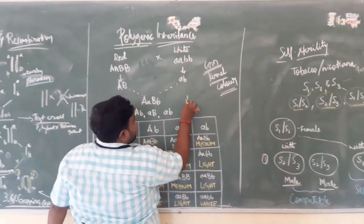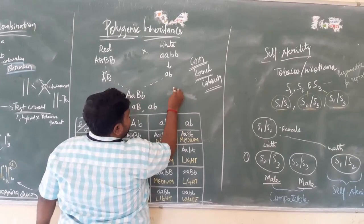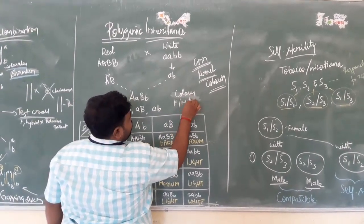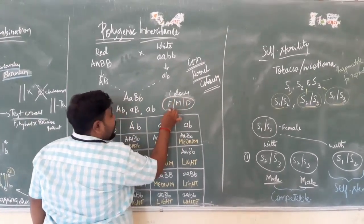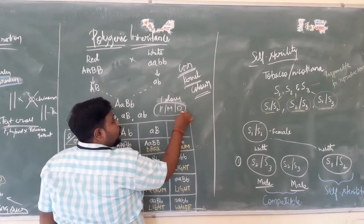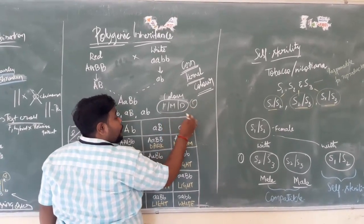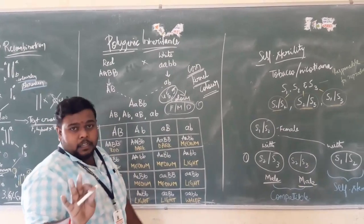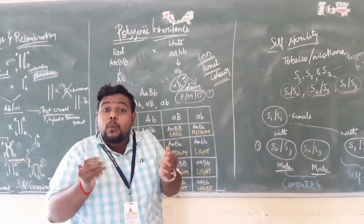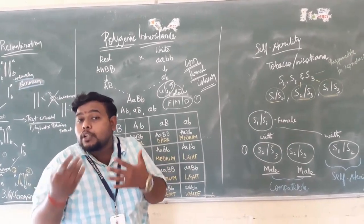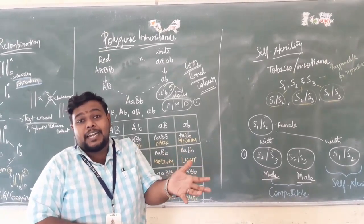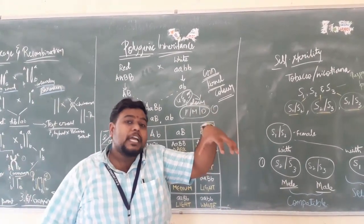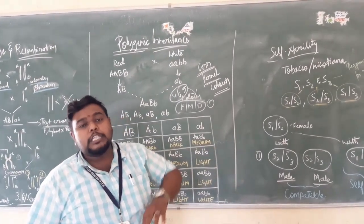Each of these colors is not controlled by one pair of genes, but they are controlled by more pairs of genes. Like, four to five genes are responsible for controlling one single character. One single character of having color will be controlled by more than one pair of genes, or more than two pairs of genes — this is what is meant by polygenic inheritance.